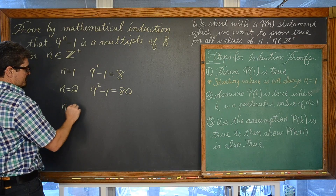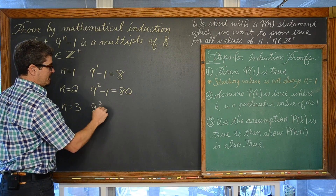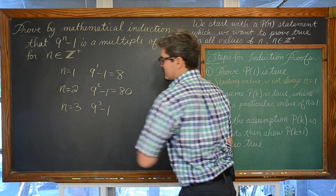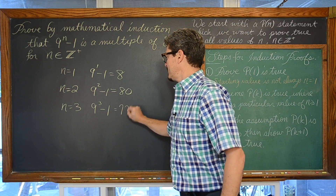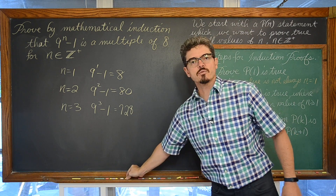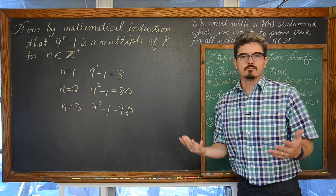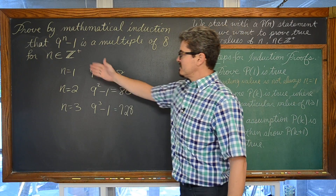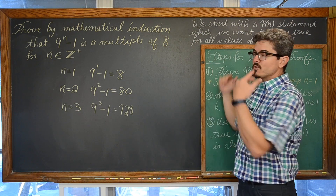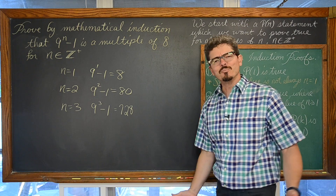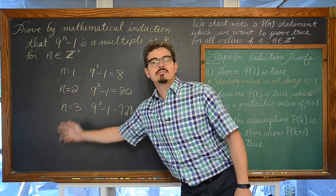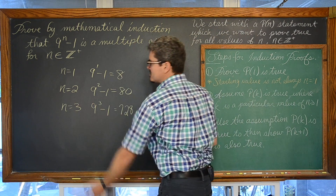And if we have n equal to 3, we have 9 cubed minus 1. If you divide 728 by 8 you get 91 — another integer. So these three values that we get from letting n equal 1, 2, and 3 are clearly multiples of 8. But I just did three examples. What happens when n is equal to 4, and then 10, and then 10,000 and so on? We can show as many examples as we would like.